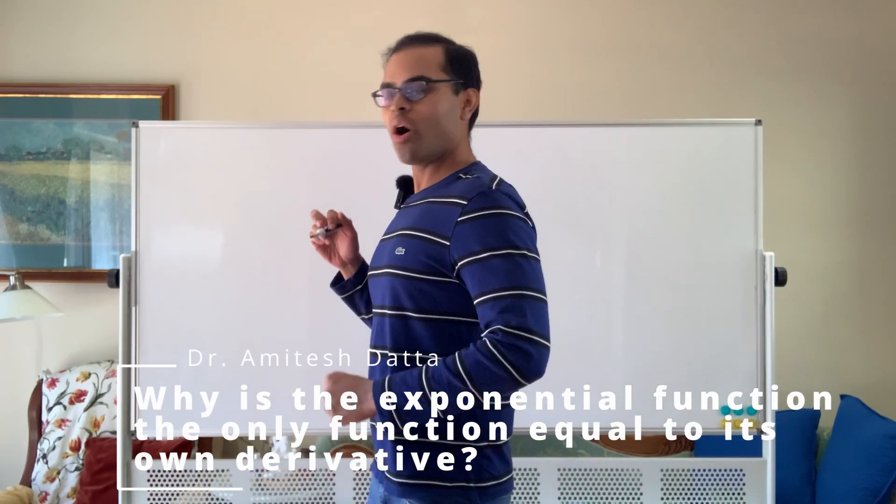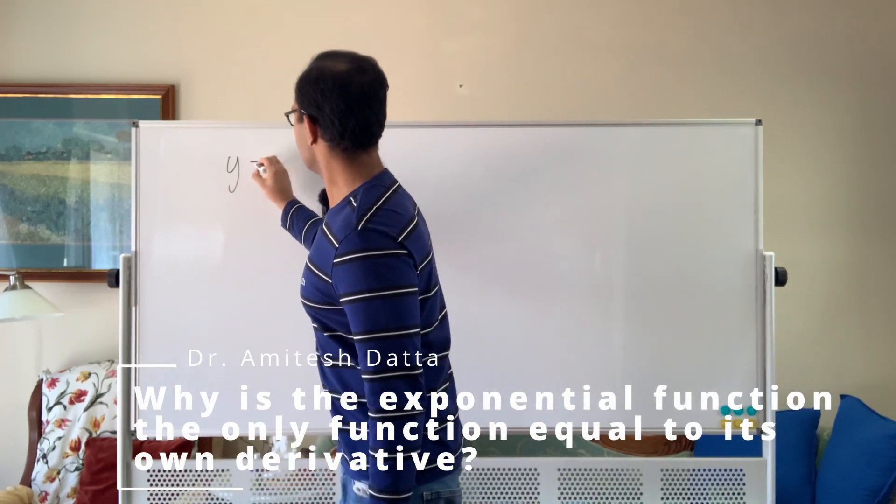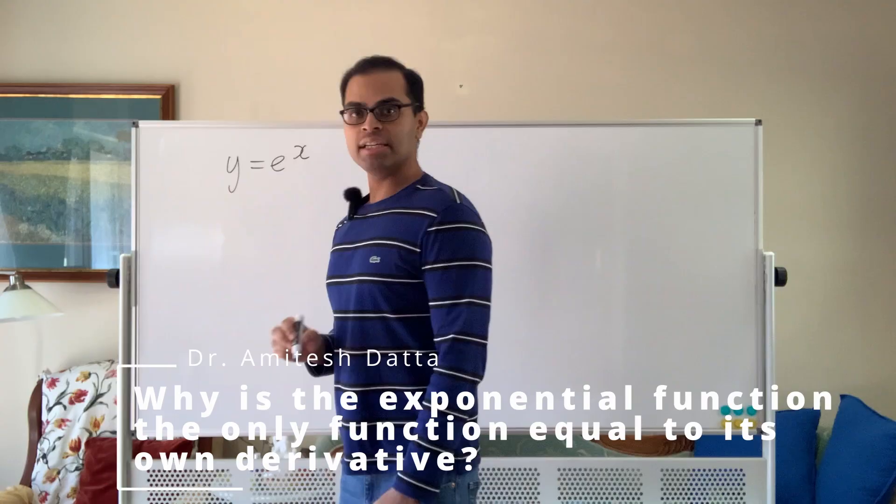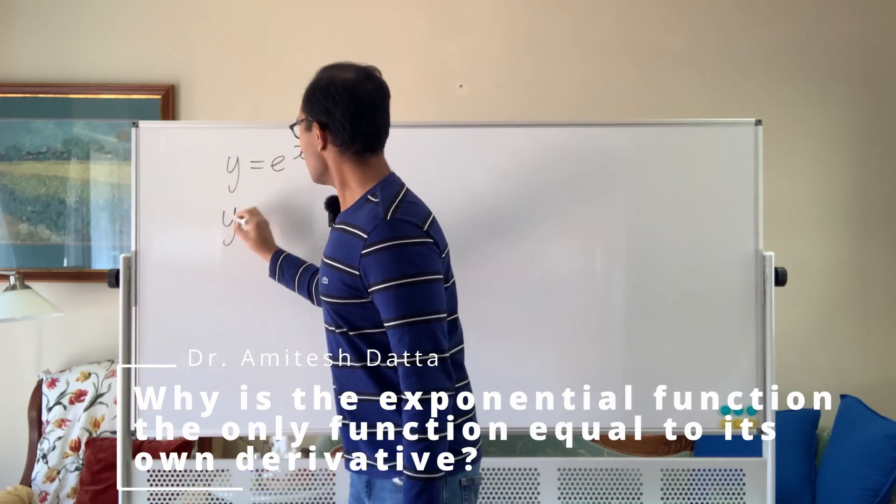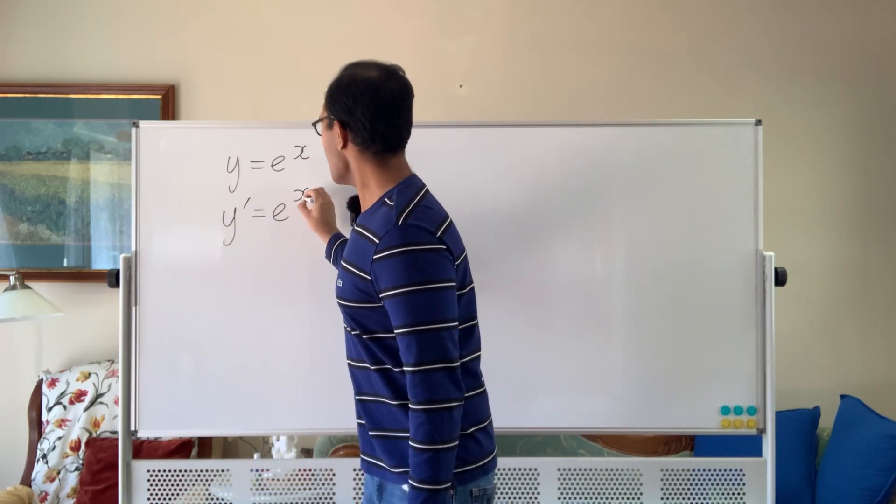Why is y equals e to the x the only function that is equal to its own derivative? So if y is equal to e to the x, we know that y prime, the derivative, is equal to e to the x.